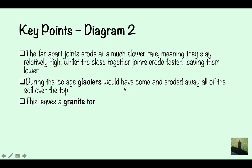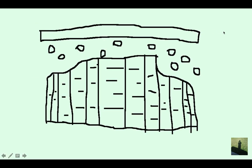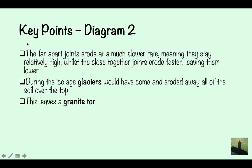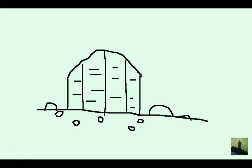Then during the ice age, glaciers will come over and eroded away all of the topsoil. So this is the topsoil, so you're going to have glaciers and they're coming over, and it's just going to get rid of all of this topsoil here. It's going to go away. And this is going to leave a granite tor, like this.